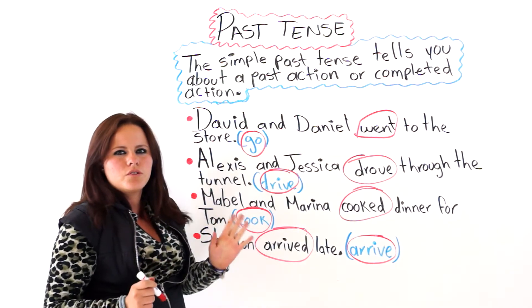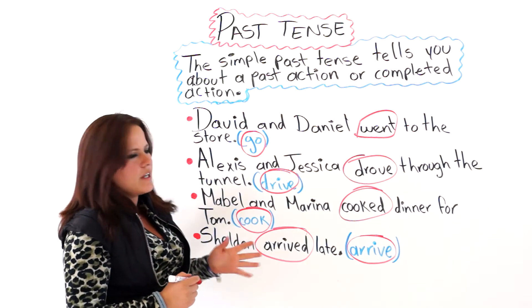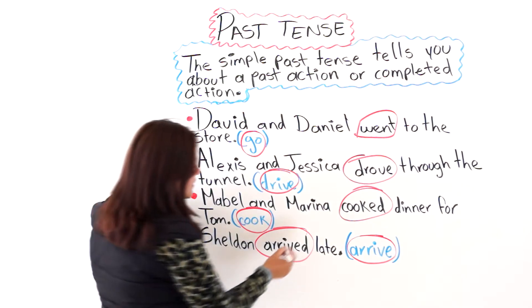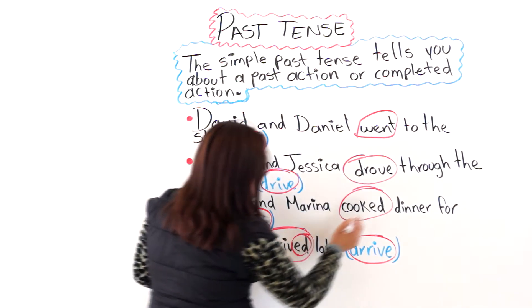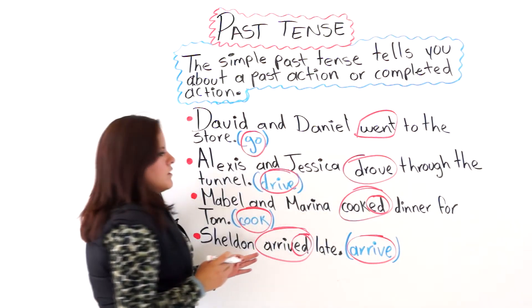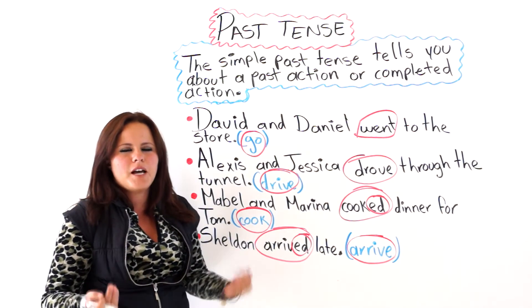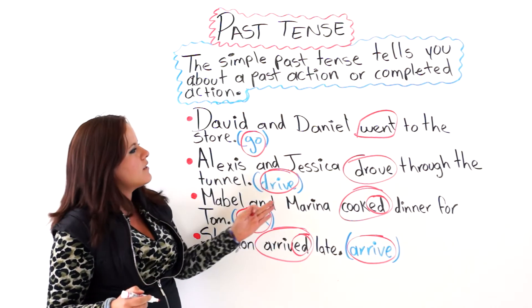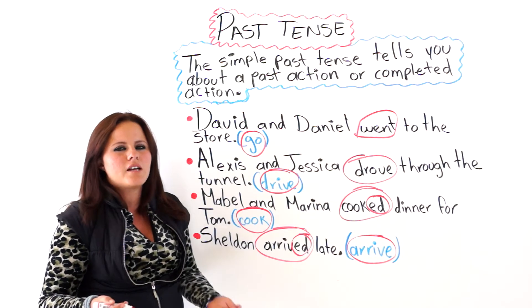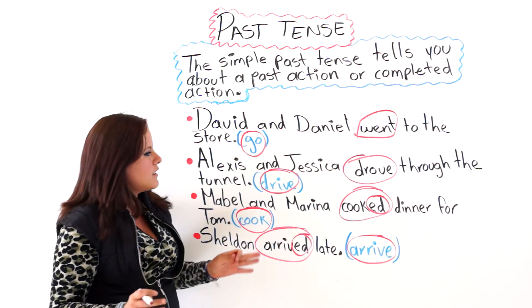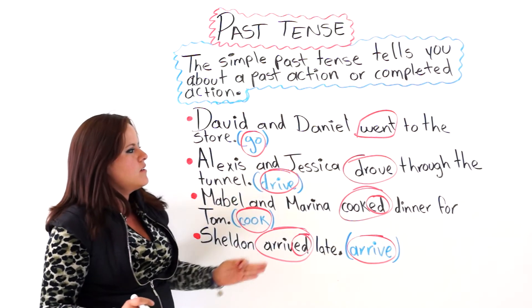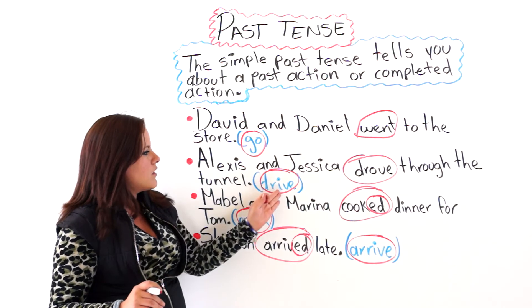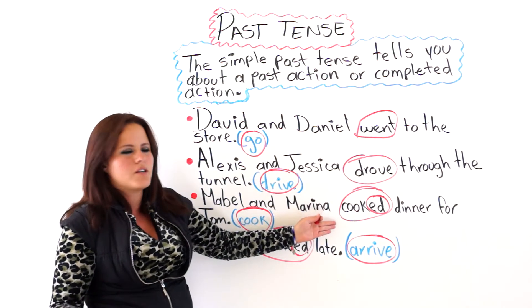We have two types of verbs: regular verbs and irregular verbs. The regular verbs will always have an ED ending in their past and past participle forms. The irregular verbs will change in both past and past participle — they will not end in ED. For example: drive, drove, past participle driven. That is why these are irregular, and the others are regular because they don't change.